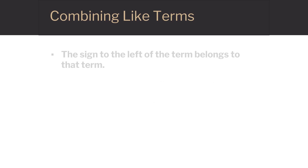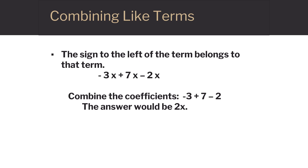It's like taking 4 things plus 8 of those same things, so you have a total of 12 of them. The sign to the left of the term belongs to that term. So for negative 3x plus 7x minus 2x, we would combine the coefficients: negative 3 plus 7 minus 2. The answer would be 2x.